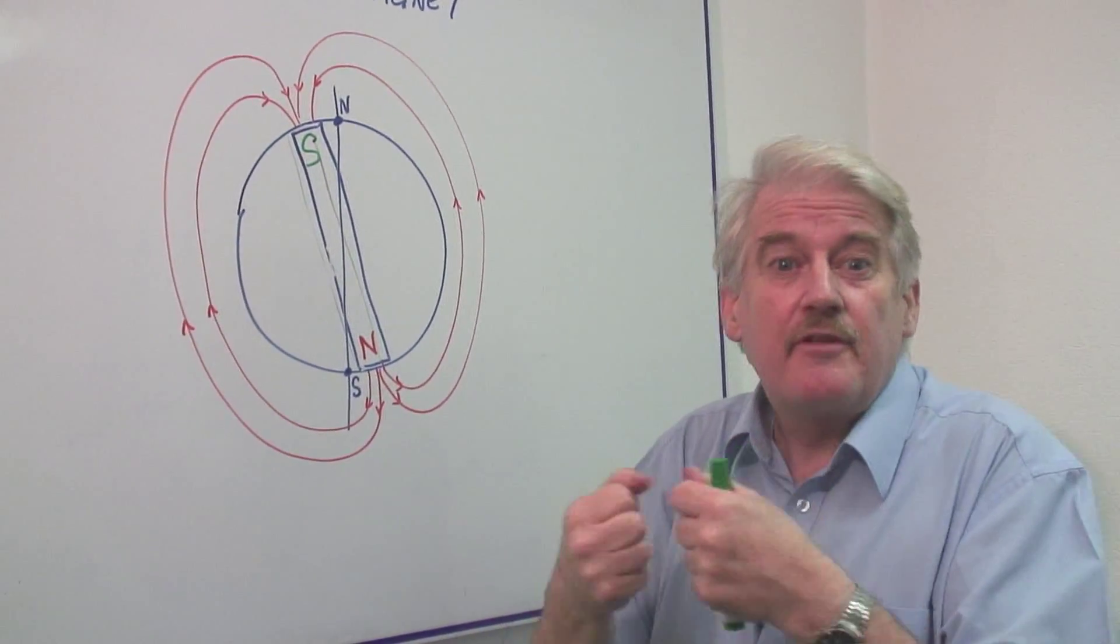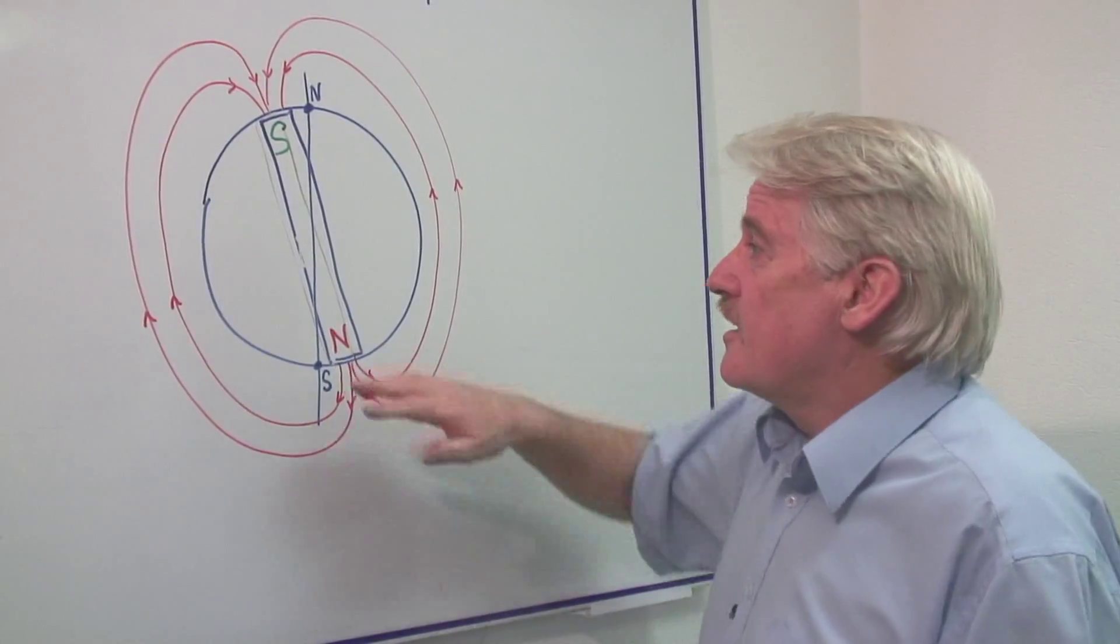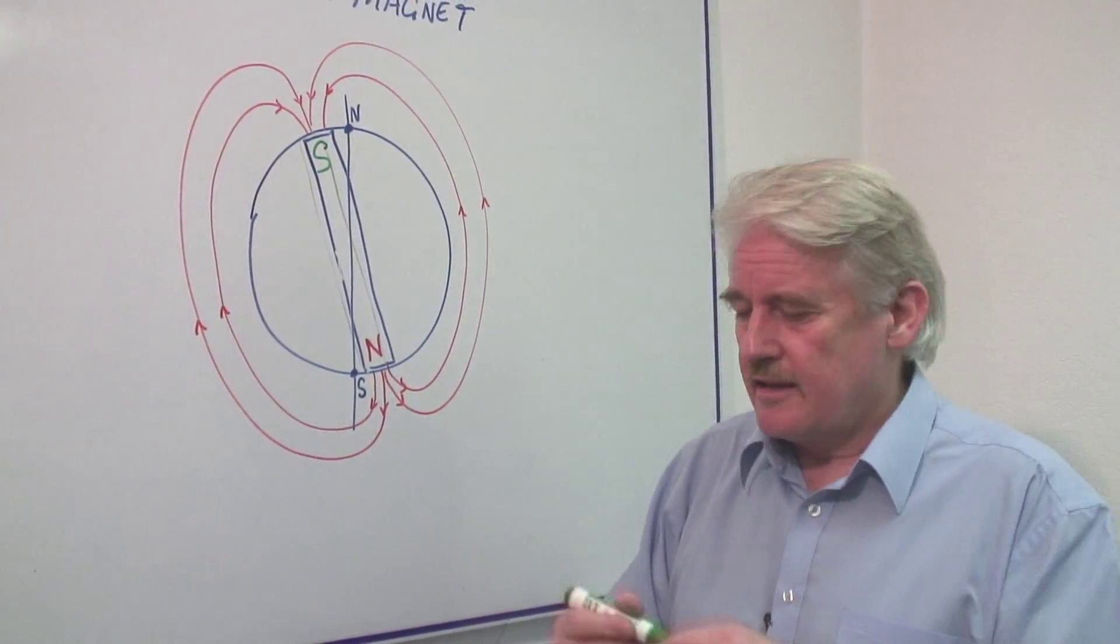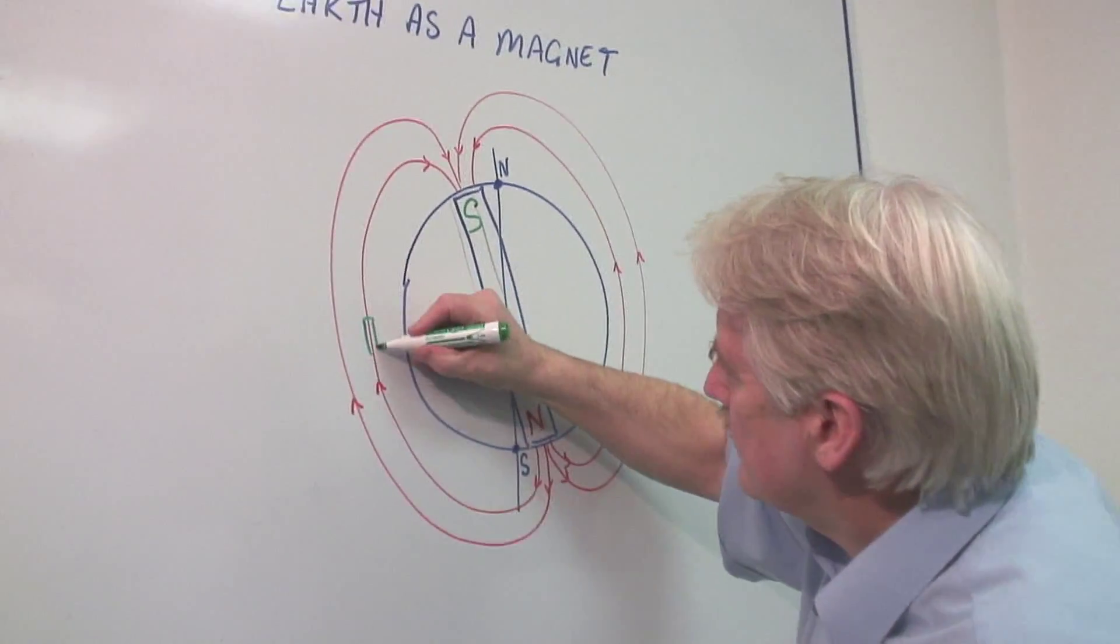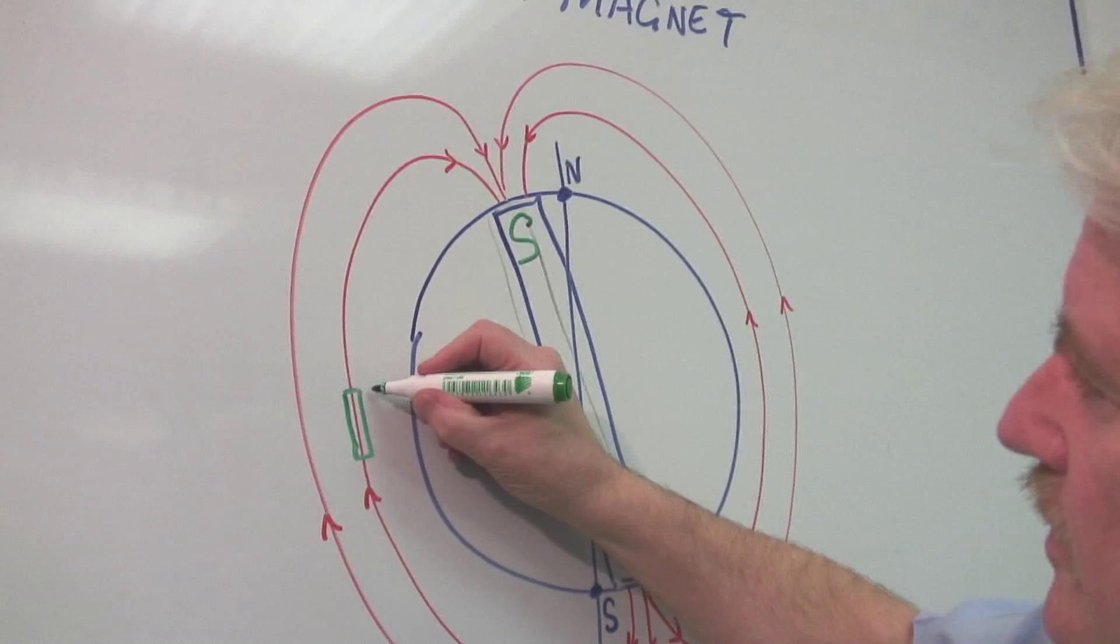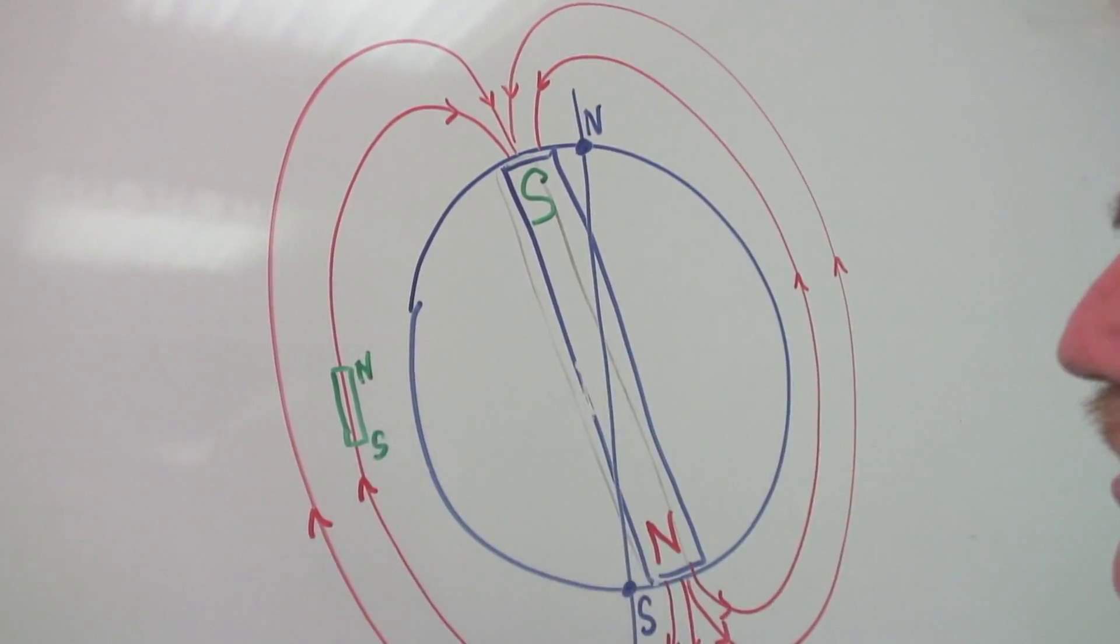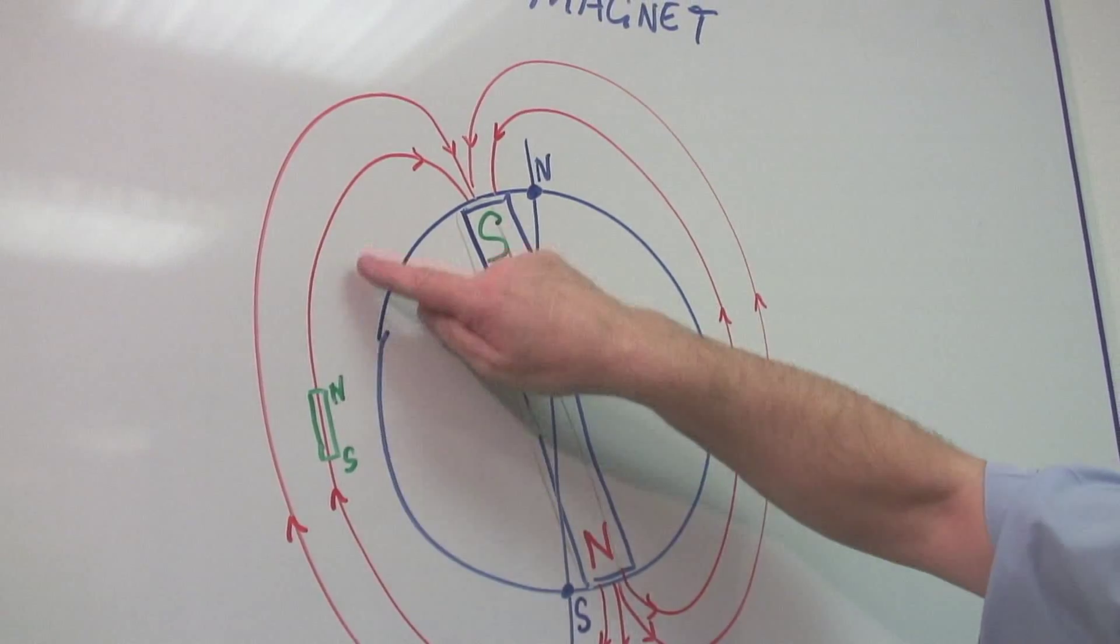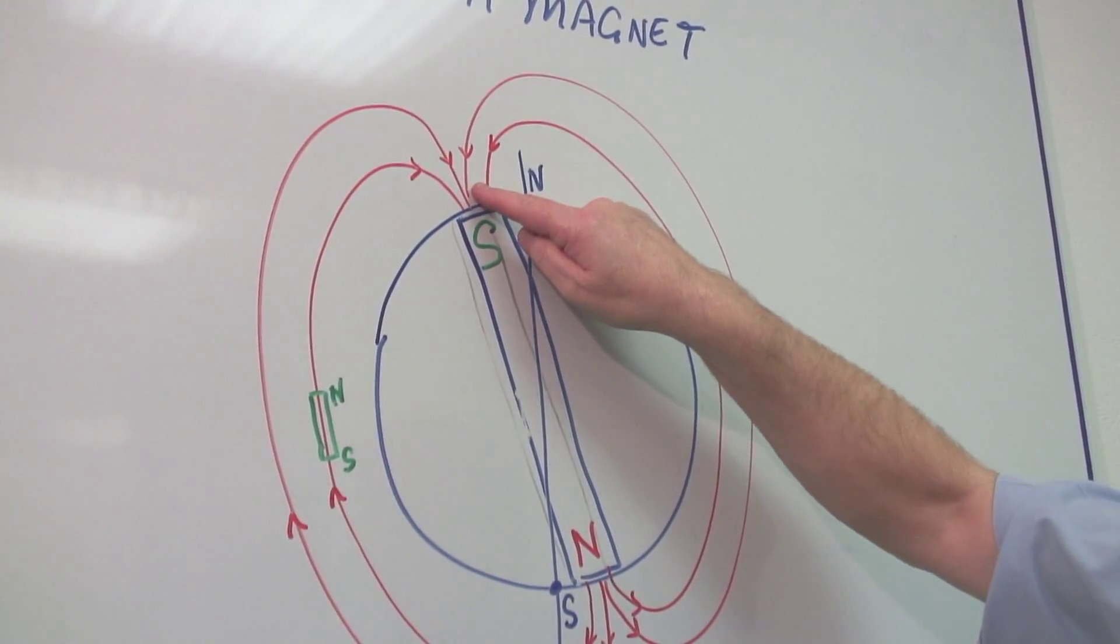They behave differently and therefore putting a magnetic object like a compass, that is like a little bar magnet, and let's say we suspend it, then we'll find that the north end of the magnet points towards the north.